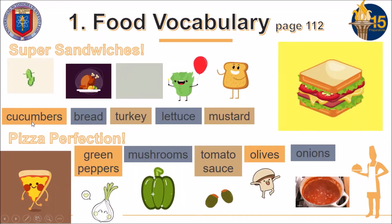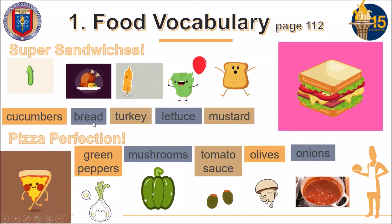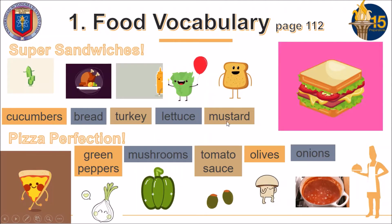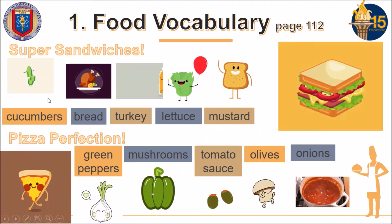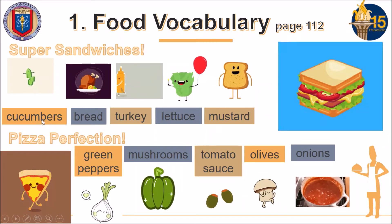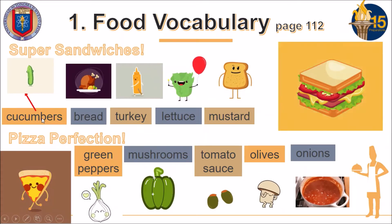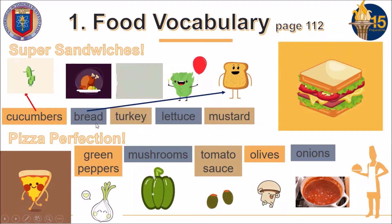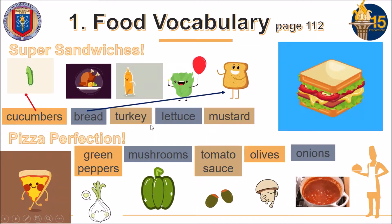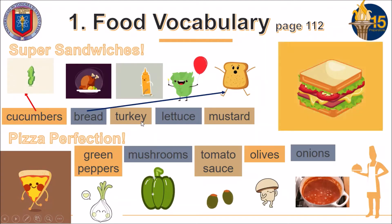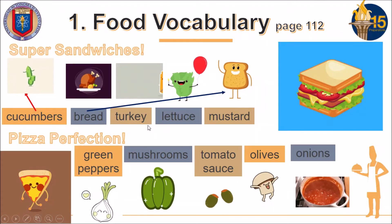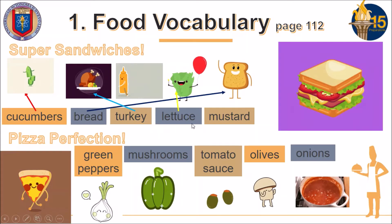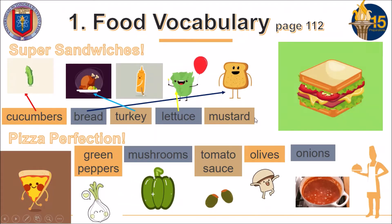The vocabulary for sandwiches: cucumbers — pepinillos; bread — pan; turkey — pavo; lettuce — lechuga; mustard — mostaza. Number 1, which one do you think it is? Then we have turkey — this is the one they cook on Thanksgiving. Then you have lettuce, the green one. And the last one is mustard, the yellow one.